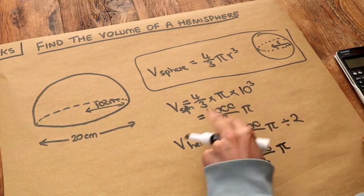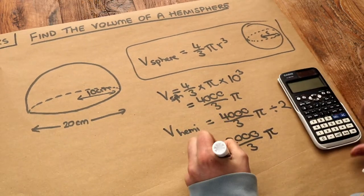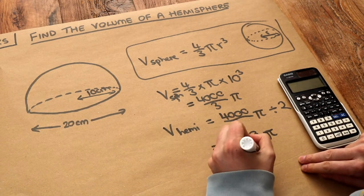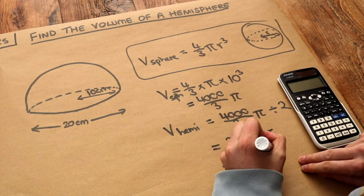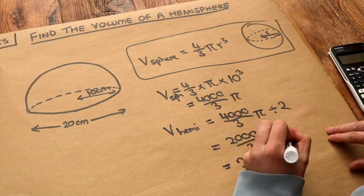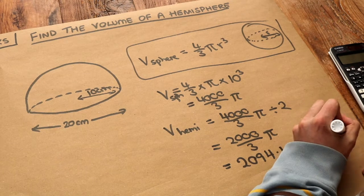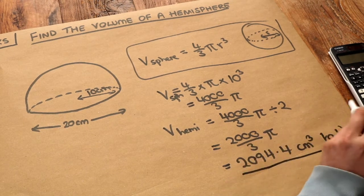We didn't really need to use our calculator there and if we wanted that as a decimal we press the SD key so we get 2094.4 centimeters cubed and that would be to one decimal place depending on what accuracy they ask for.